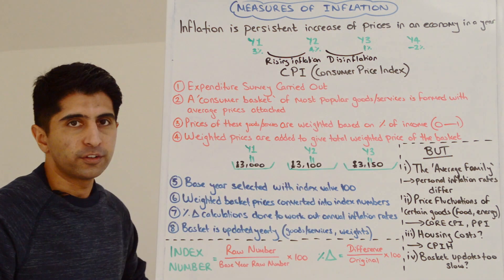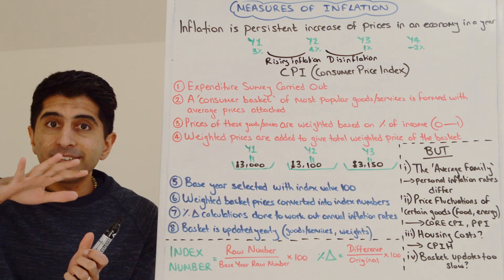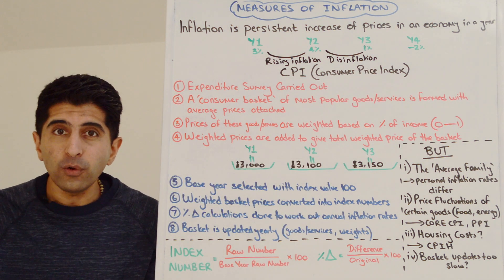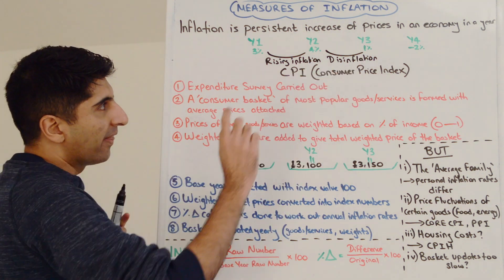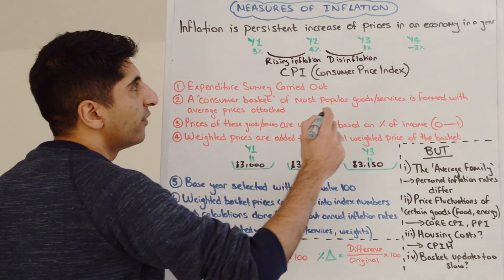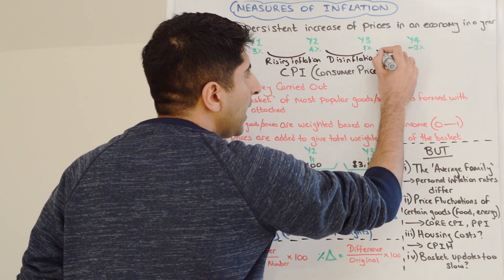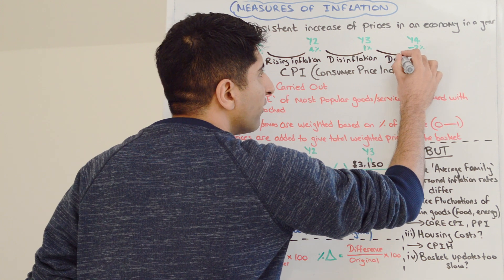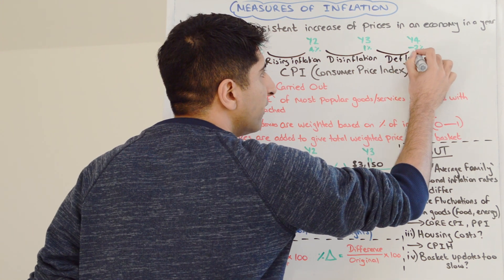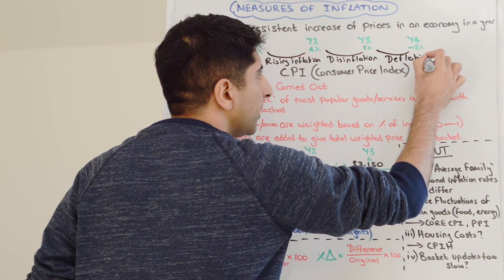Deflation occurs when prices are actually falling in the economy, meaning the inflation rate is negative, and that's what we see in year four. Minus two percent — a negative rate of inflation — is deflation in the economy.